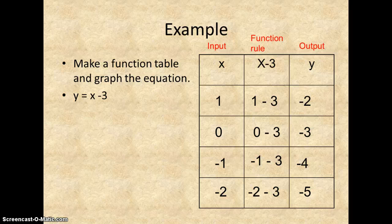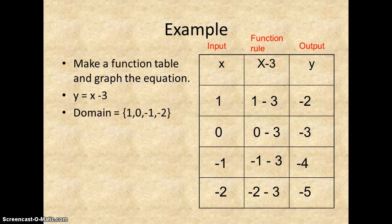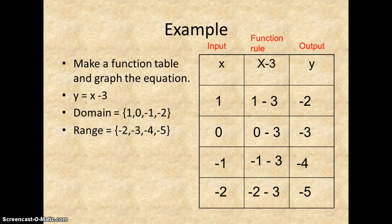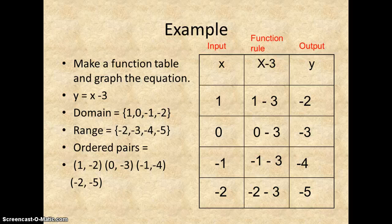There's your output results. Once we get into the graphing section, we'll actually graph them. If I asked you what the domain was, this is what you'd give me - that is your x. If I asked you for the range, you'd give me the output, and the ordered pairs would be as follows. And that's the part that we would use to graph them.